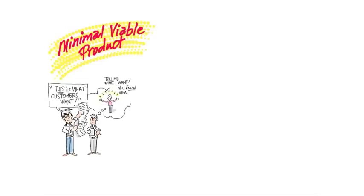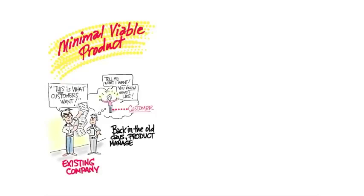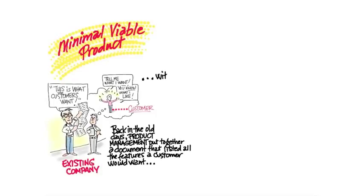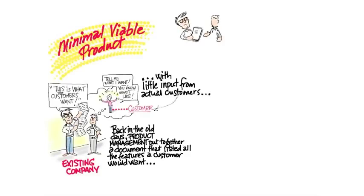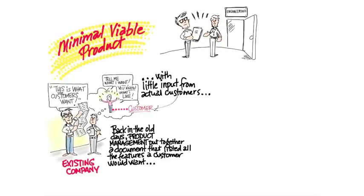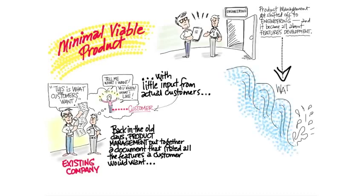Back in the old days, what we used to do is specify the entire feature set of the product from beginning to end. Now, this makes sense when you're in a large company releasing version 2.0, 3.0 and 4.0 because you kind of have a feeling of who the customers are and what they need. So a product manager can be pretty accurate about, you know, I've been interacting with customers for the last year and a half and I think I know what they need.